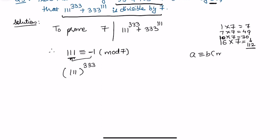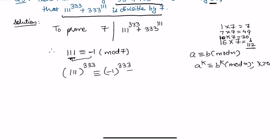We use the property that if a ≡ b (mod n), then a^k ≡ b^k (mod n) for any positive integer k. So this becomes (-1)^333, and since 333 is odd, this equals -1 modulo 7. That gives us our first congruence: 111^333 ≡ -1 (mod 7).